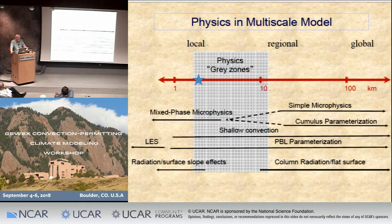We get into this gray zone. We'd really like to be at one kilometer at least for convective simulations, but we're kind of stuck at around three to four kilometers because of computer speed. That's where we spend most of our time in my group, and we've gotten a lot of benefit from being in that scale regime.